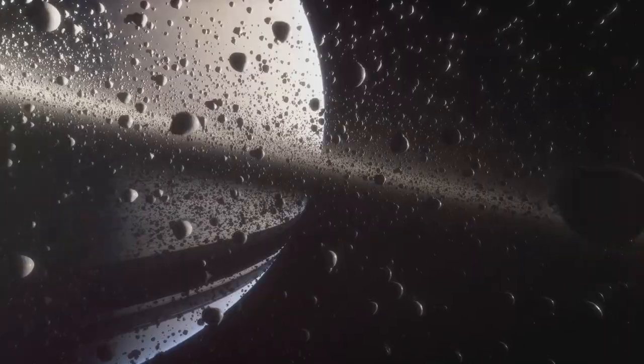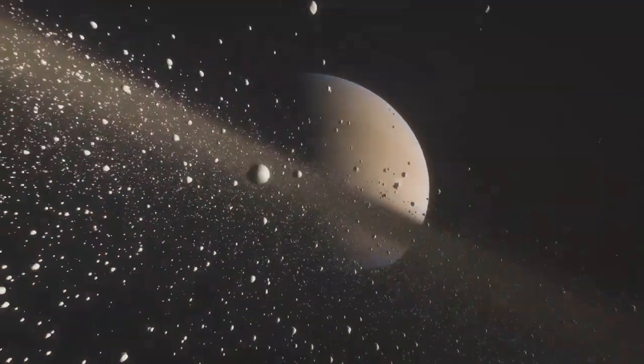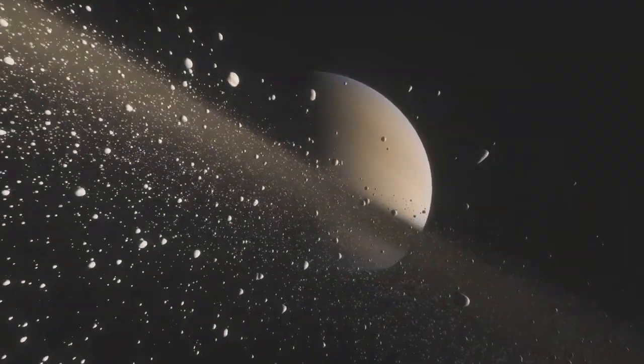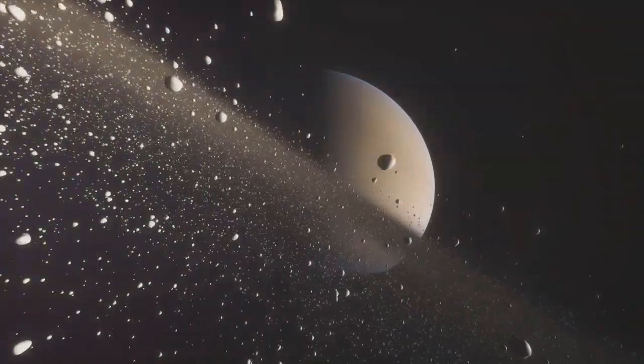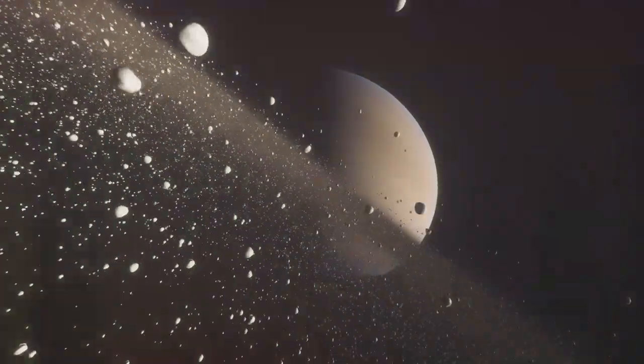For instance, the icy particles in Saturn's rings can tell us about the planet's water content, while the dust and rock particles can hint at geological activity. The rings' dynamics, such as their rotation and gravitational interactions, can also shed light on the planet's own rotational dynamics and internal structure.